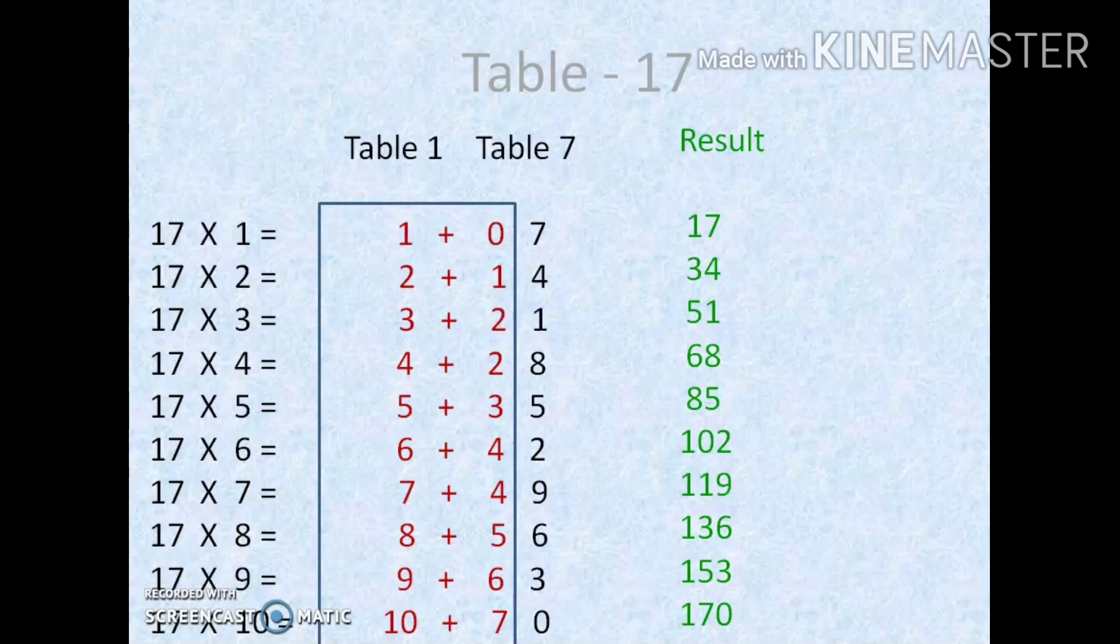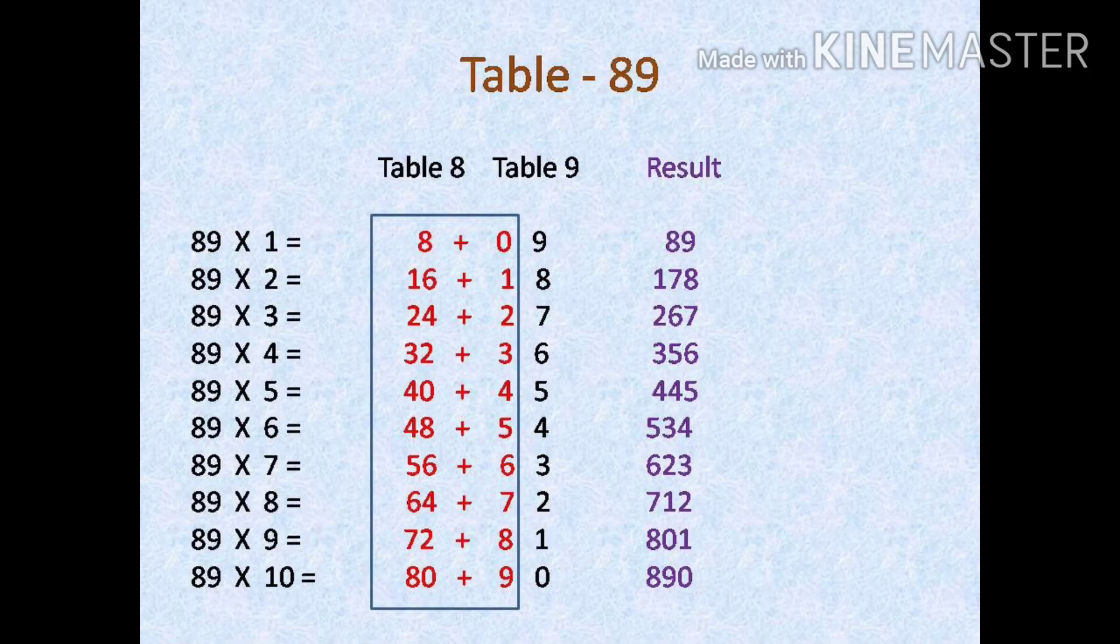Just check. Let me explain this using another example so you can get a clear idea about that. I have written the table for 89. First I have written the table for 8. Near to that I have written the table for 9.